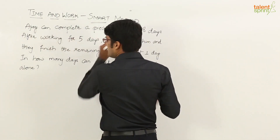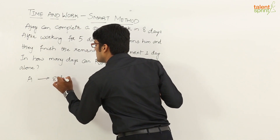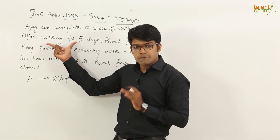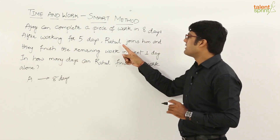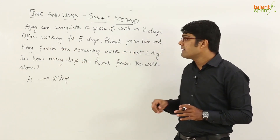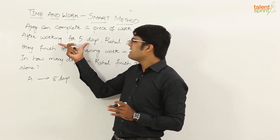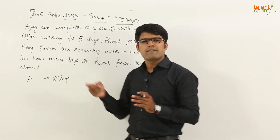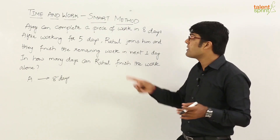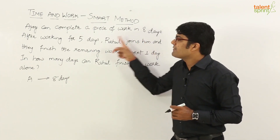Ajay can finish the total work in eight days. He has worked for the first five days, after which Rahul joins him, and these two together finish the remaining work in the next one day. So it is obvious that when Ajay has worked for five days, he has finished some part of the work — he cannot finish the complete work because that requires eight days.